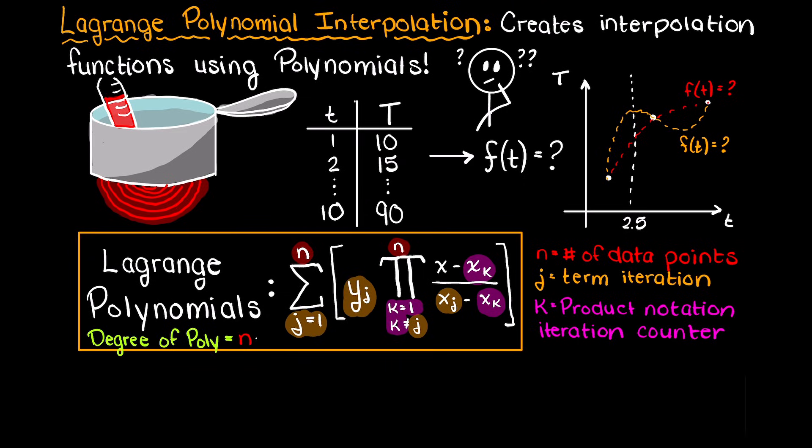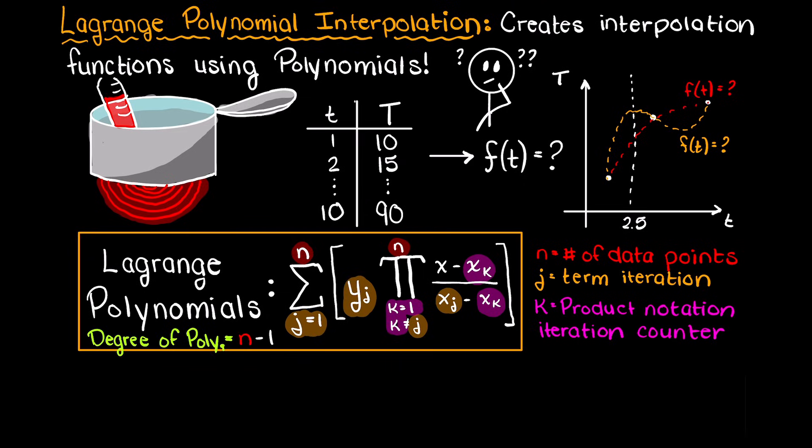I recognize that this may still be confusing, so let's say that we have the following three data points for our previous bucket example for which we need to find the function of time for. Well, we have three data points, therefore n equals 3.